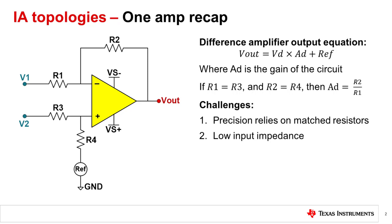In a previous lecture, we discussed and derived the 1-amp IA, commonly known as a difference amplifier. While this IA topology offers many configurable features, including gain, attenuation, and level shifting, it does come with its own set of drawbacks.